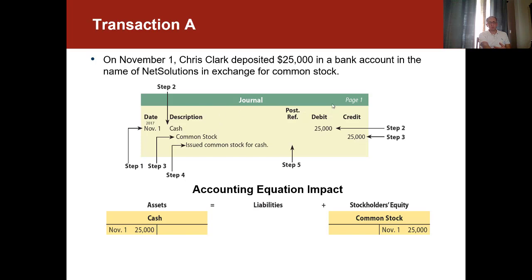The journal consists of a date column, a description column (slightly wider), a post-reference column, a debit column, and a credit column. On top, we have the title 'Journal' and the page number. Step four: we write down what this transaction is about — an explanation such as 'issued common stock for cash.' This is a brief explanation for why this journal entry was made. Step five is the post-reference column, which is still empty here. Once we post to the ledger, which we'll cover in the next chapter, we'll record the post-reference.